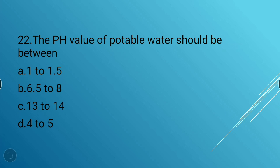Next question: The pH value of potable water should be between — 1 to 1.5, 6.5 to 8, 1 to 14, or 4 to 5. The answer is 6.5 to 8 — the pH value of potable water should be between 6.5 to 8.